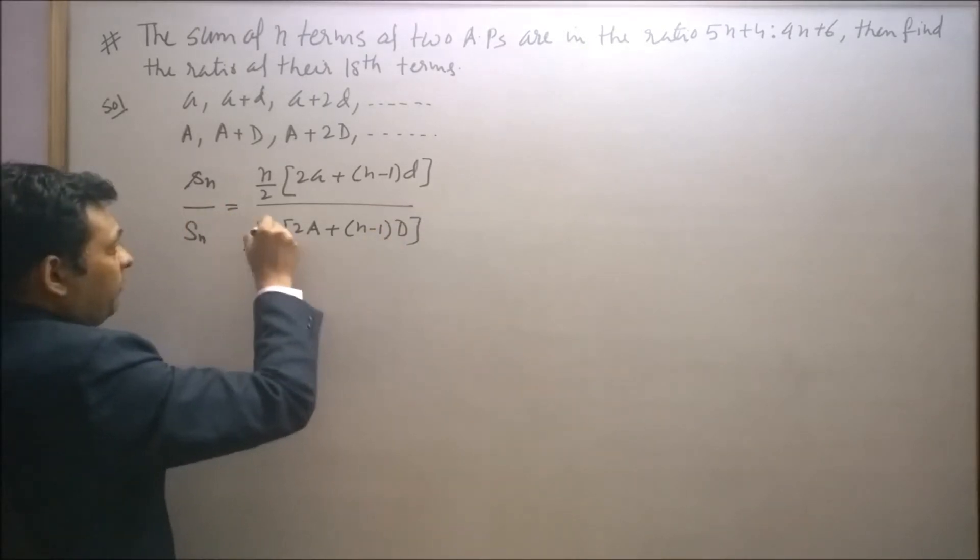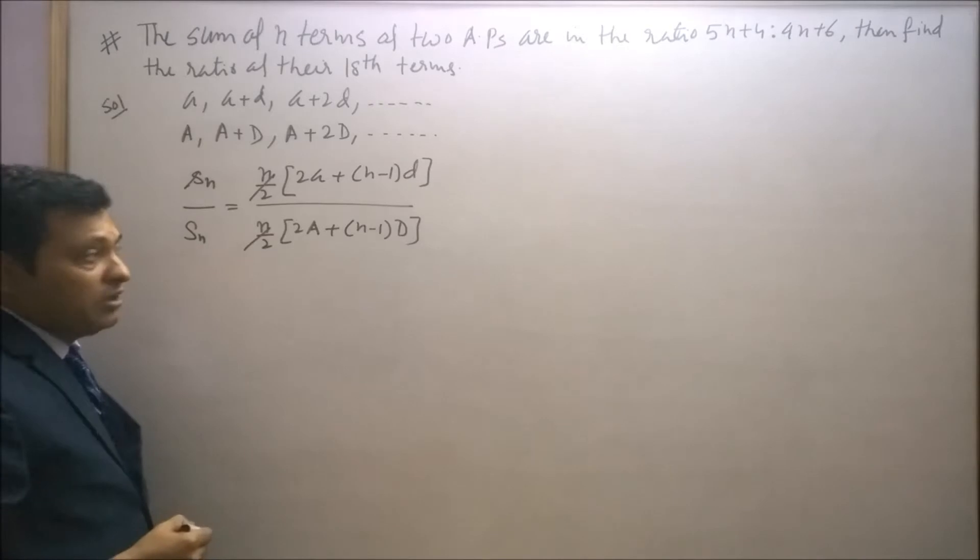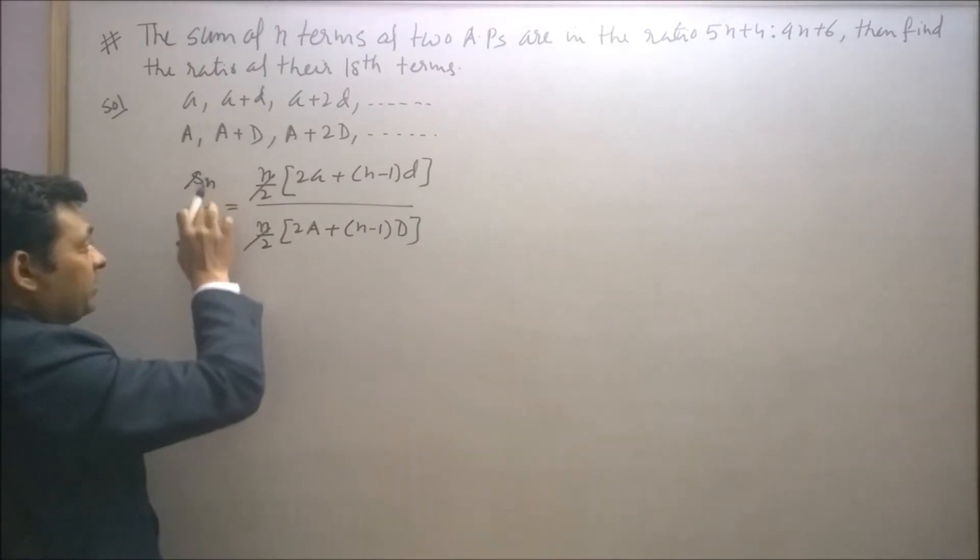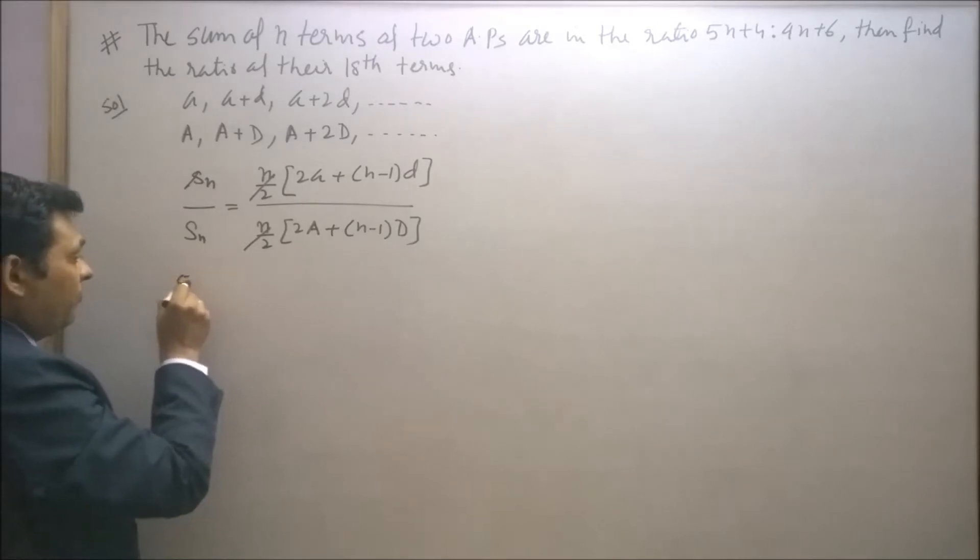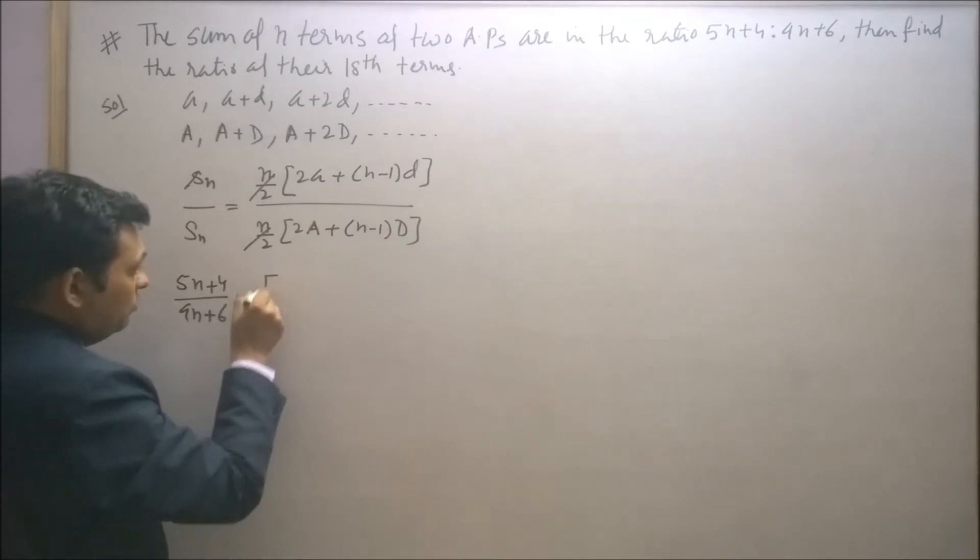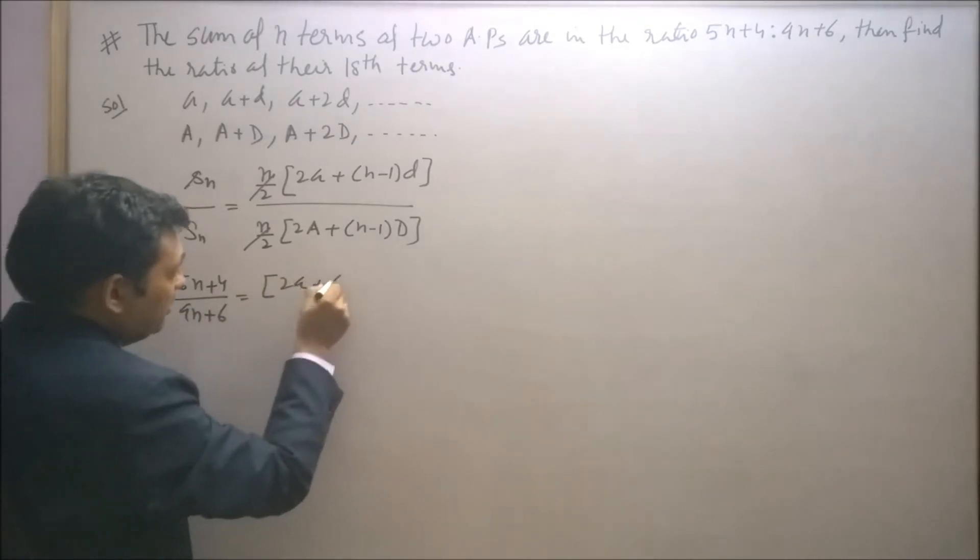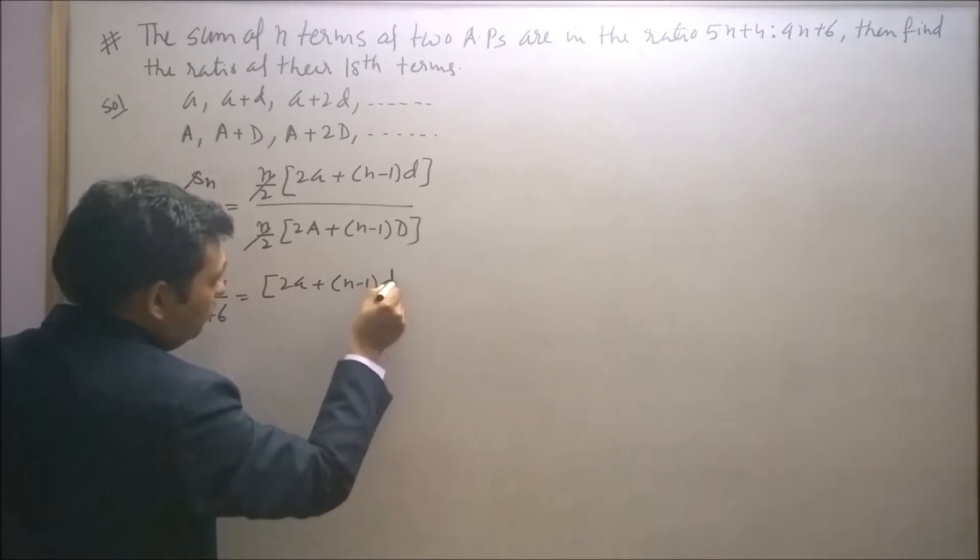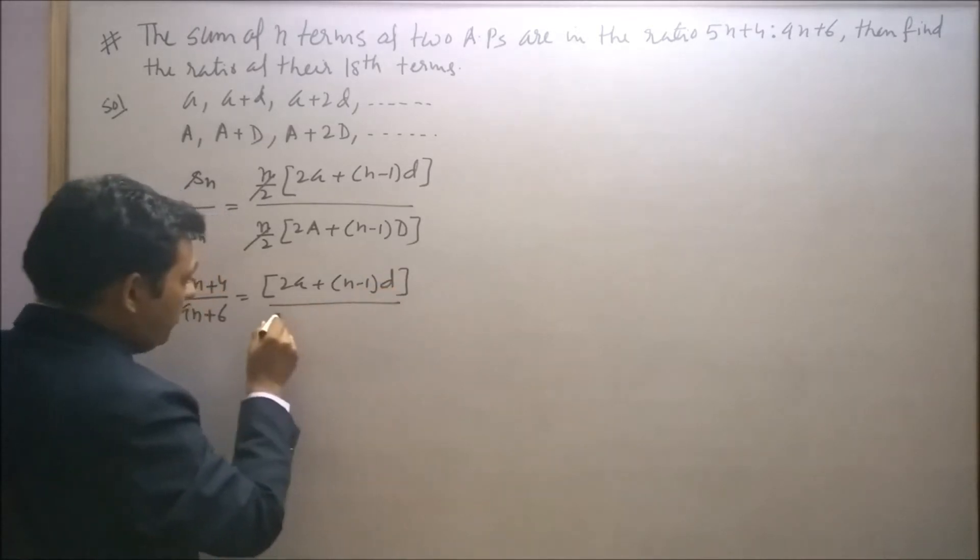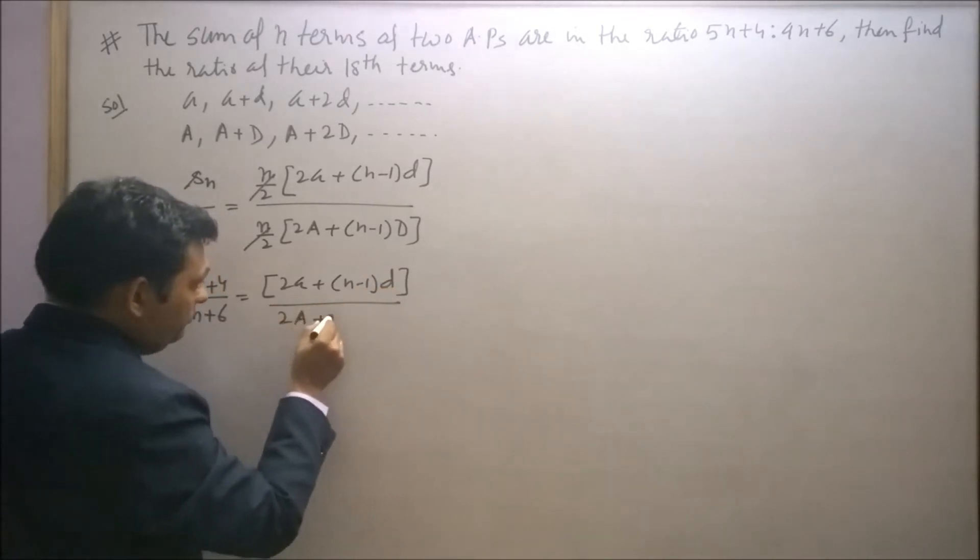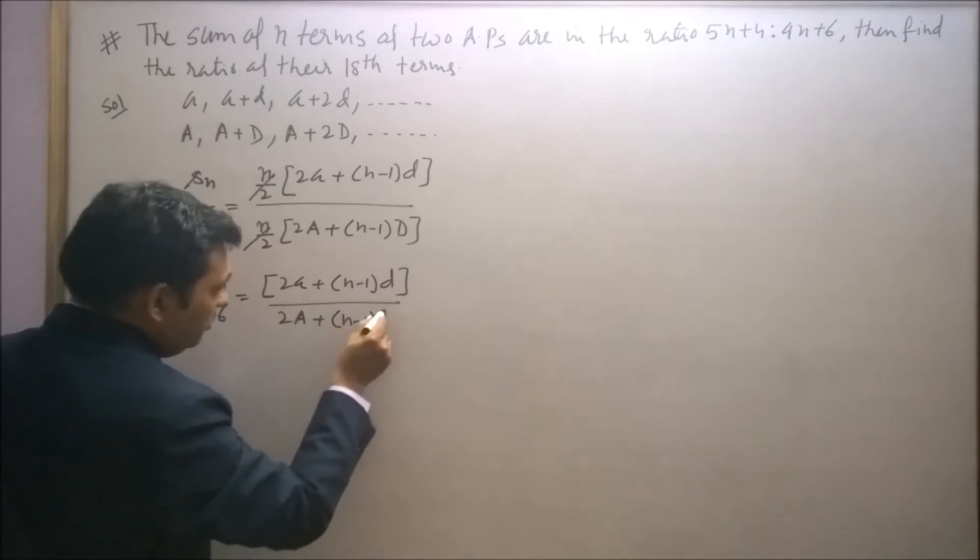So n by 2 and n by 2 will cancel out and small s n upon capital S n is given as 5n plus 4 upon 9n plus 6 is equal to 2a plus n minus 1 into d upon 2 capital A plus n minus 1 into capital D.